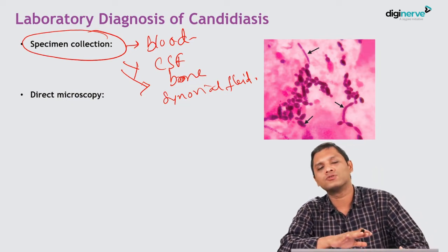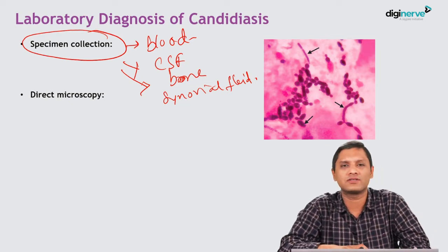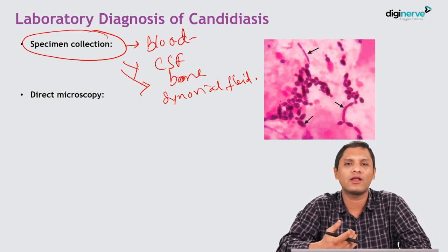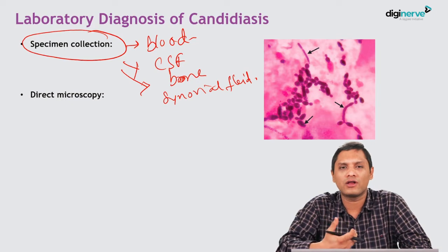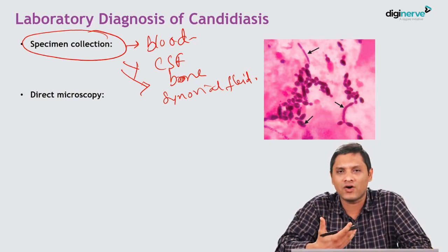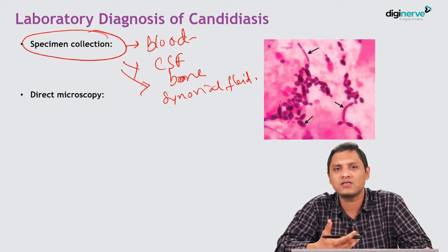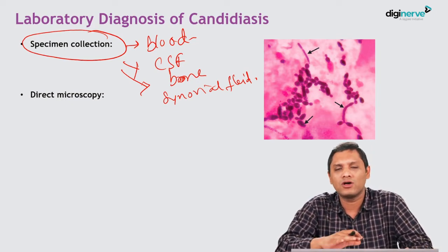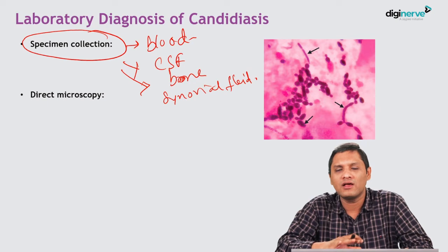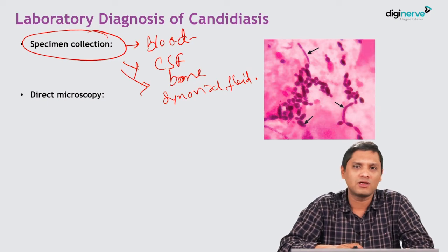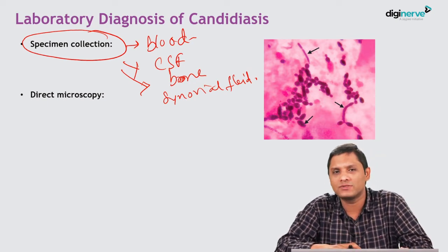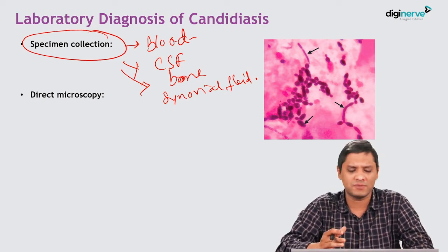For cutaneous and mucocutaneous infection due to Candida, you can collect various specimens such as vaginal discharge, esophageal specimens, or pharyngeal swabs. These are the various specimens.